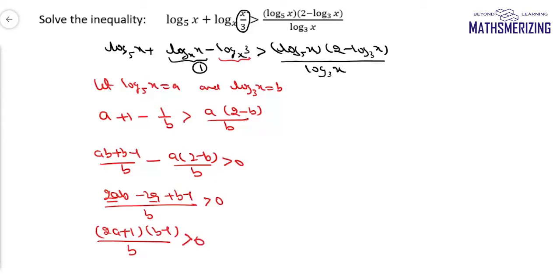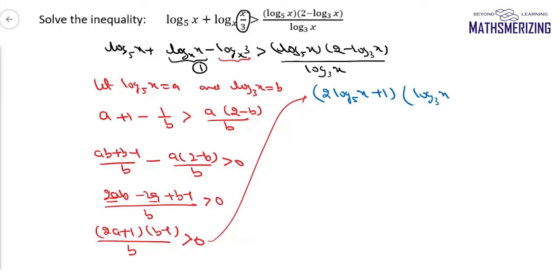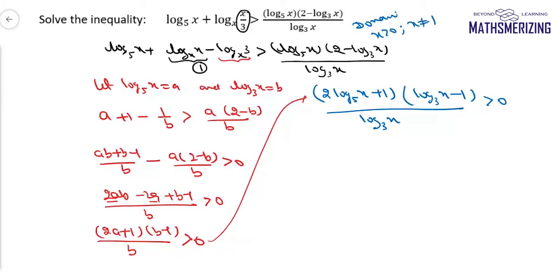Putting back the values of a and b, I can write it as 2 times log x to the base 5 plus 1, and log x to the base 3 minus 1, upon log x to the base 3, and it should be greater than 0. The domain in this case will be x greater than 0 and x not equal to 1.